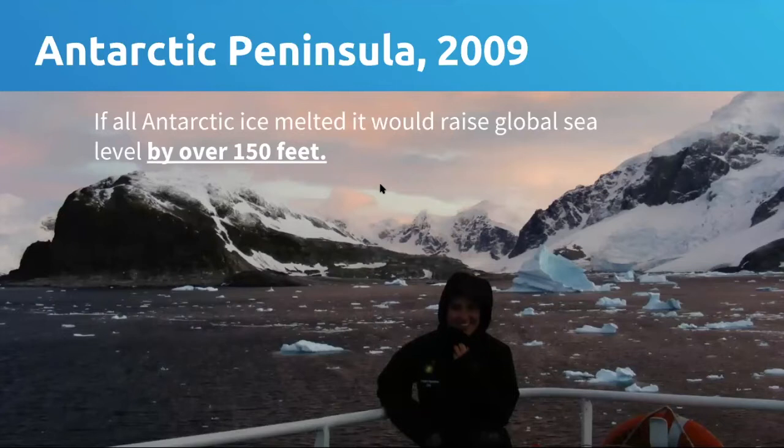I was lucky enough to go down to the Antarctic Peninsula back in 2009 on a research expedition. The poles — our North and South Pole — are some of the most vulnerable places to climate change, because as the planet warms, the poles warm faster than anywhere else. And this happens to be where most of our ice is.